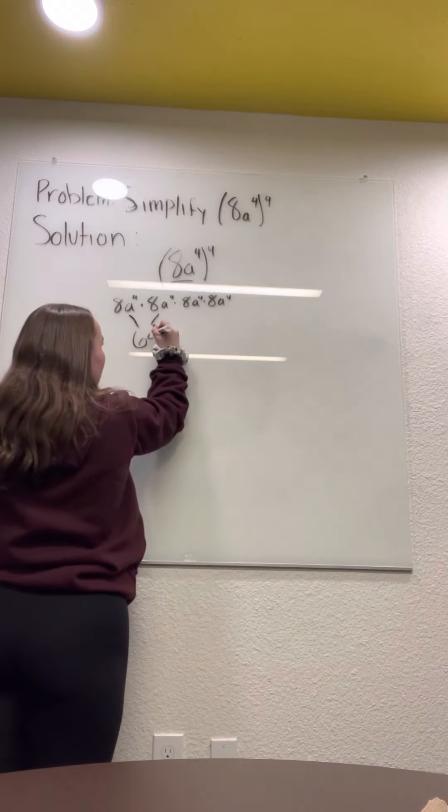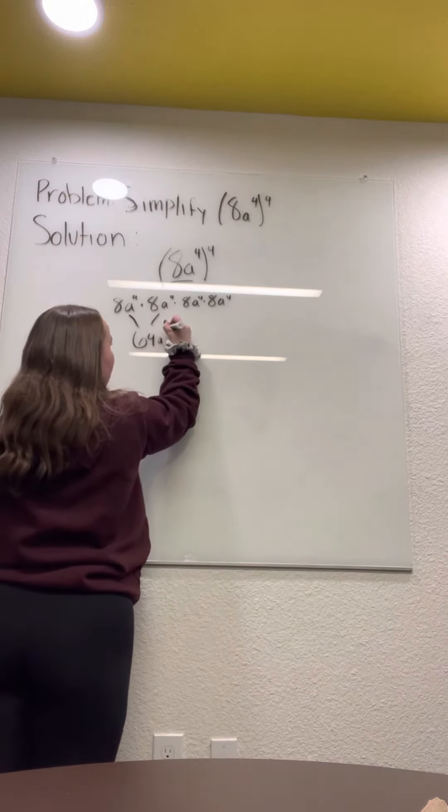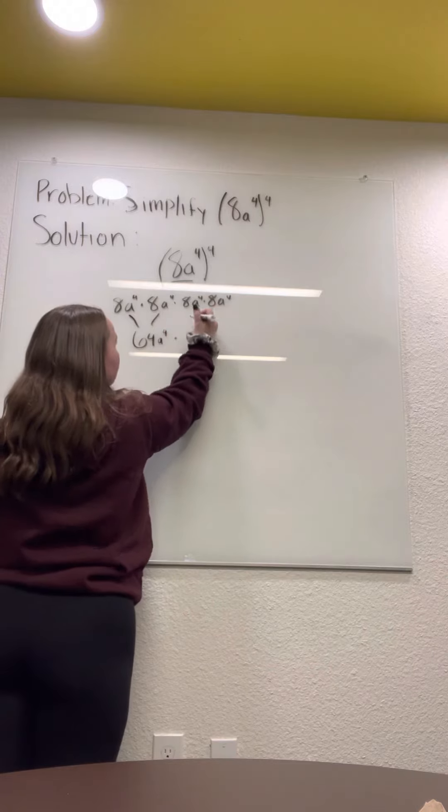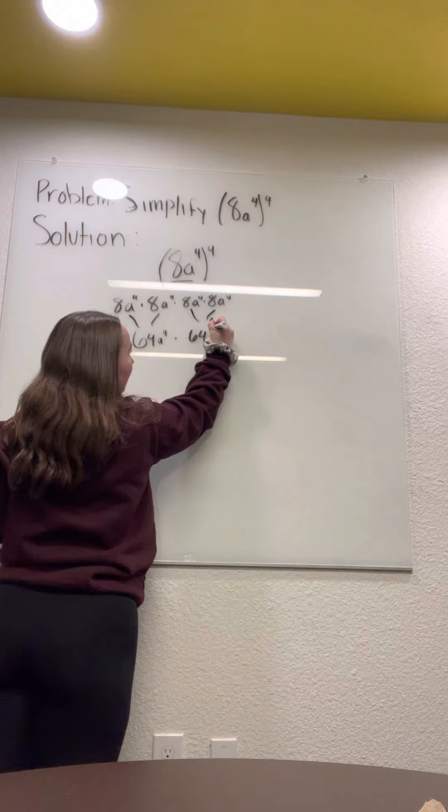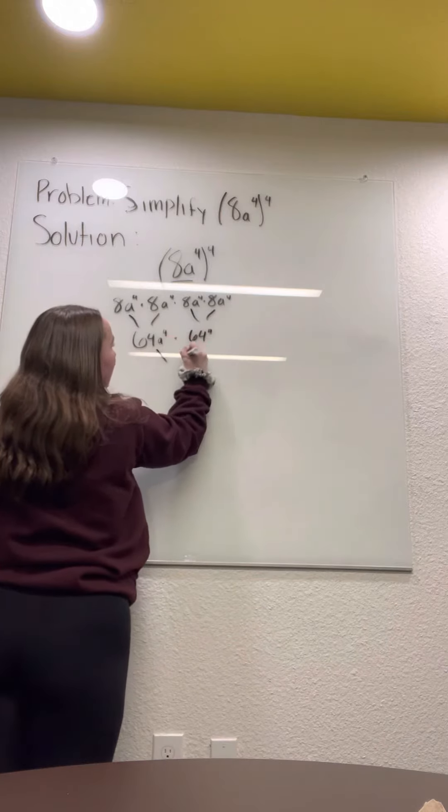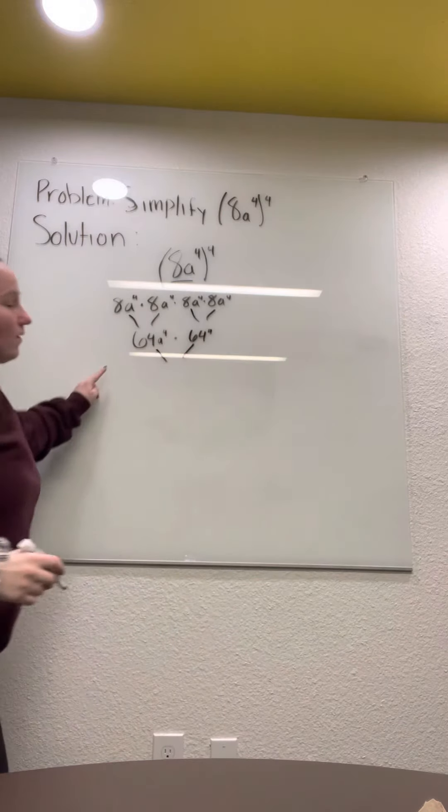So you have 64a to the 4th, and then you got to times it by this one, which 8 times 8 also equals 64 to the 4th. And then we're going to do times 64 to 64, which equals 4,096a.